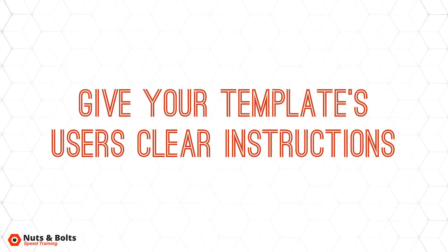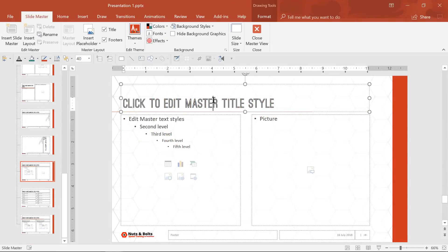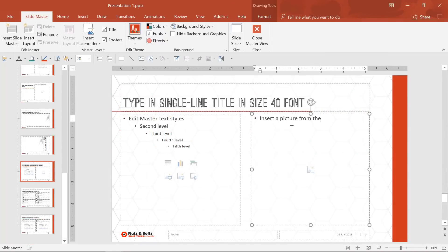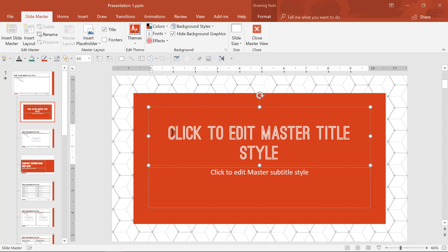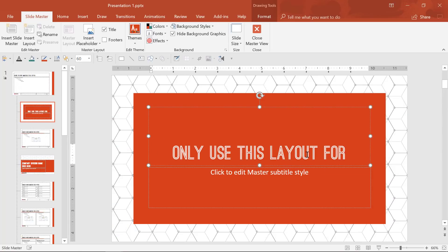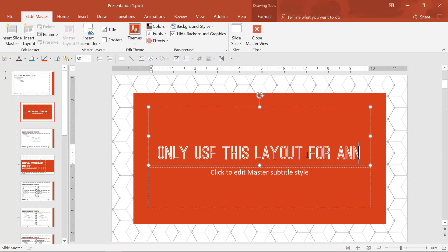For example, a picture placeholder will crop and resize itself better than a regular multi-content placeholder will. Number 6: edit the prompt text to help instruct your users on how to use your template. Did you know that you can edit the prompt text for your placeholders? You can type anything you want in there — some suggestions include formatting instructions or even types of situations the slides should be used in.